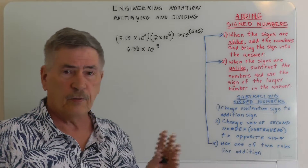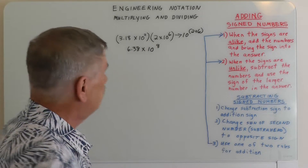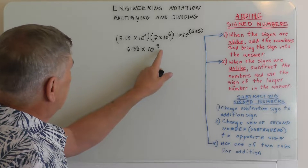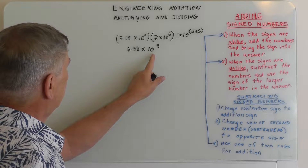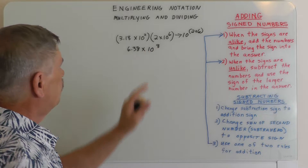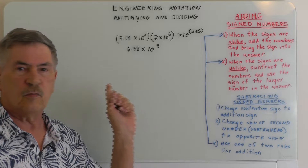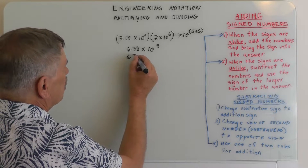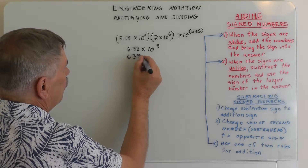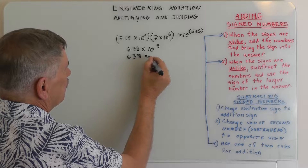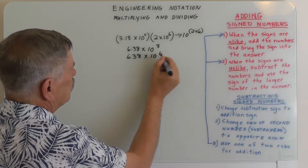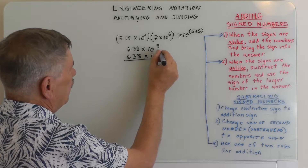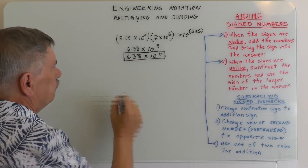Now we want to put this in engineering notation. If I take this and bring it down to 10 to the 6, that's going to move the decimal over 2 places. So that's going to be 638 times 10 to the 6. And that's the answer for that one.